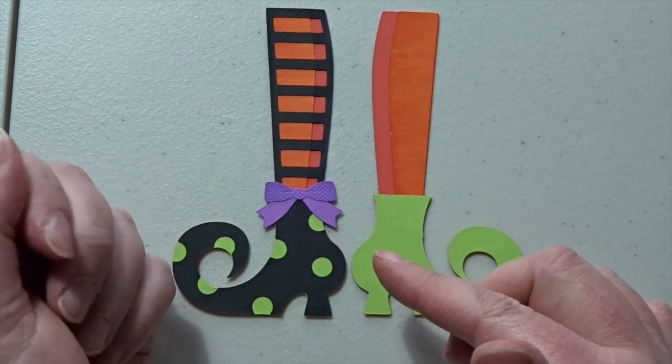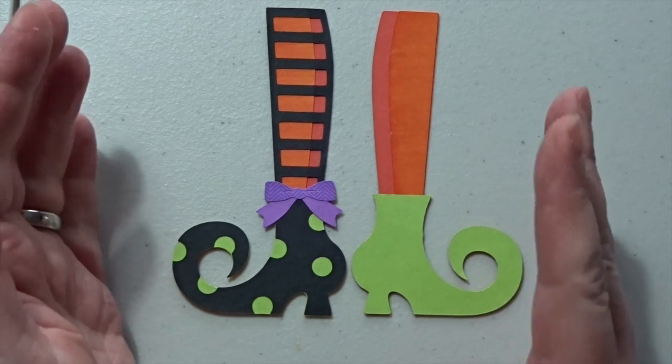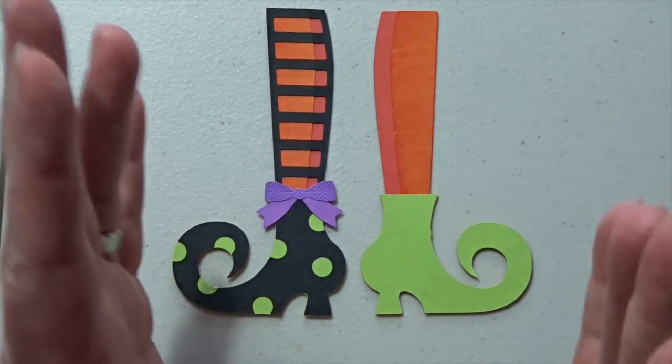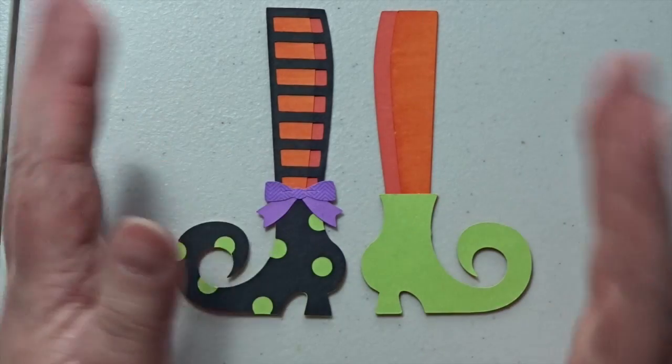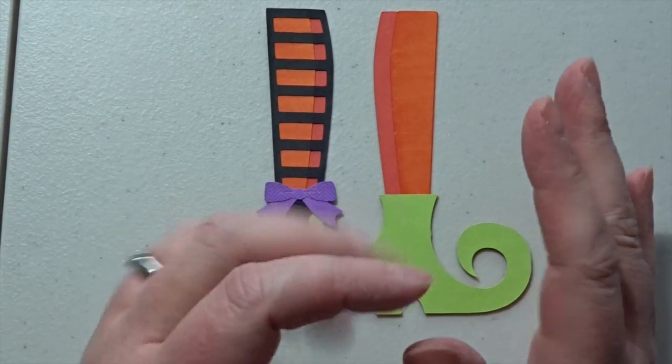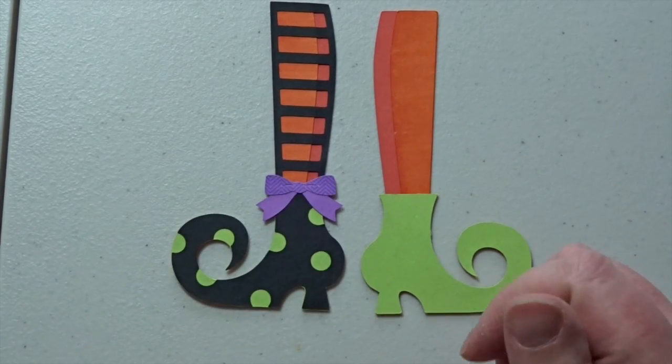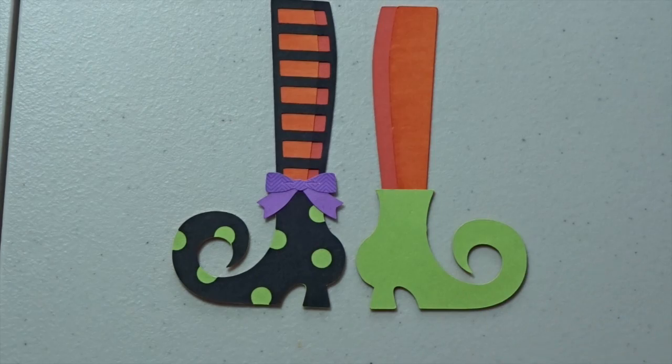I've seen people do, what do they call those art journals. And literally they just have one or two of the witch's legs as, you know, running from the top of the page to the bottom of the page. And that would be super cute too, especially if you just used one of them, and just make it that big. But I didn't want anything that huge today. All right.